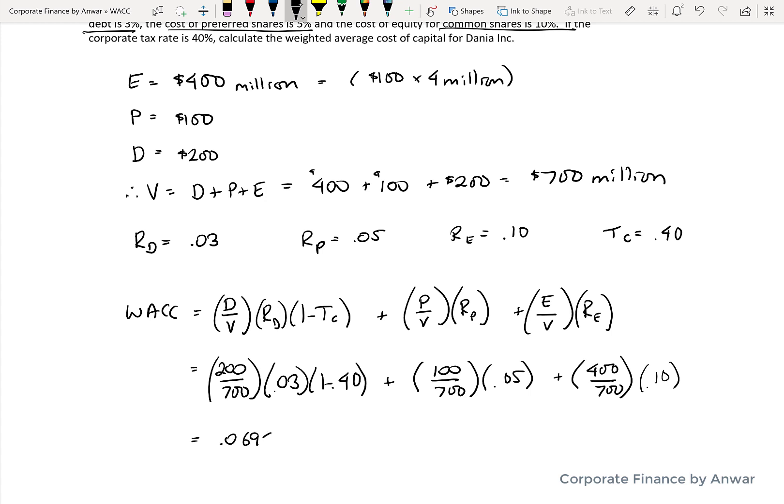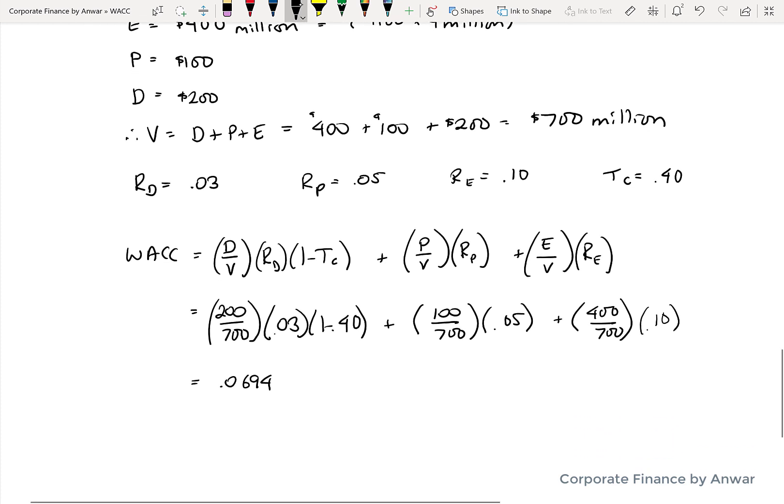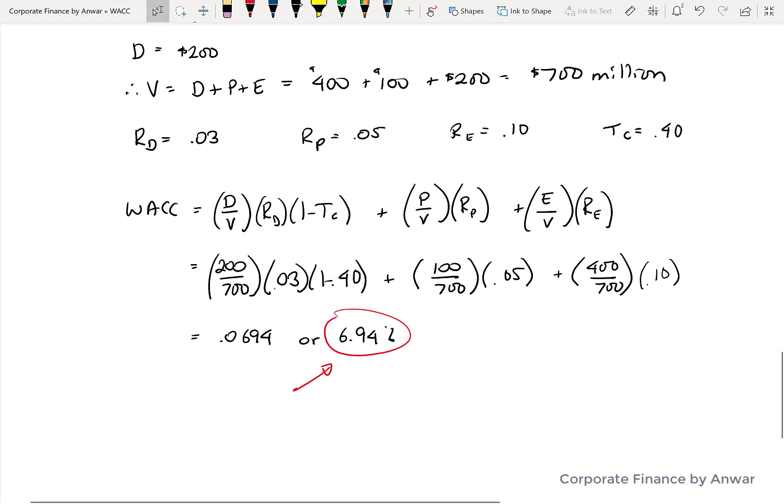If we solve for that, we get 0.0694 or 6.94%. So that is the minimum percentage that the company is going to need to return on all of the investments that they make in the future, or they're not adding any value. So this is going to be the hurdle rate or the discount rate or the bare minimum that they must earn on everything going forward.